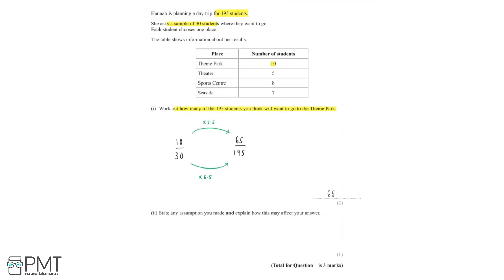Now we need to state any assumption that we made and explain how this may affect our answer. Well now we assumed that this sample of 30 students represents everyone in the population of 195 students. And so we can write down that we assumed that this sample is representative. And so if the sample wasn't representative, our answer to part i would be wrong.